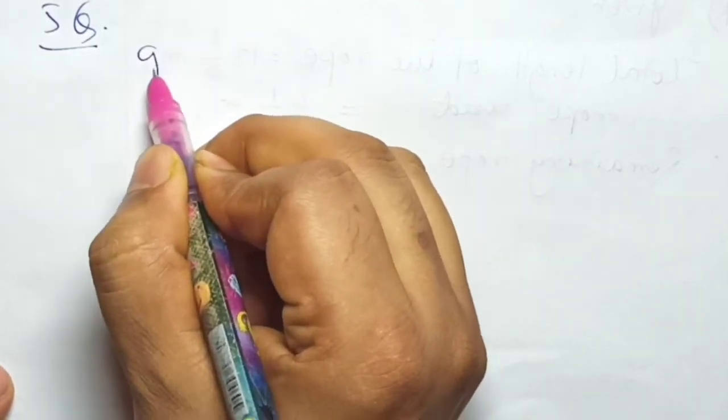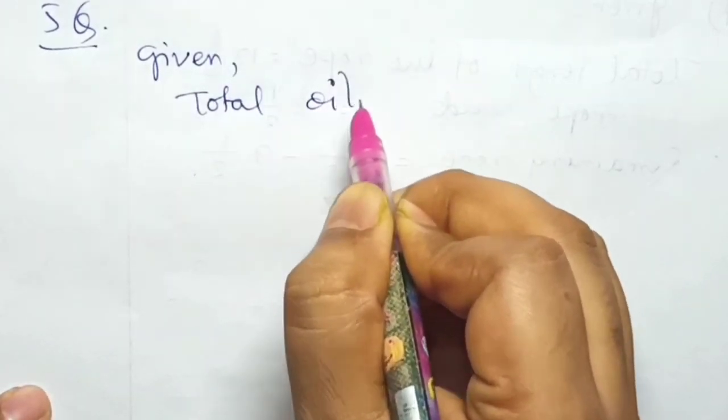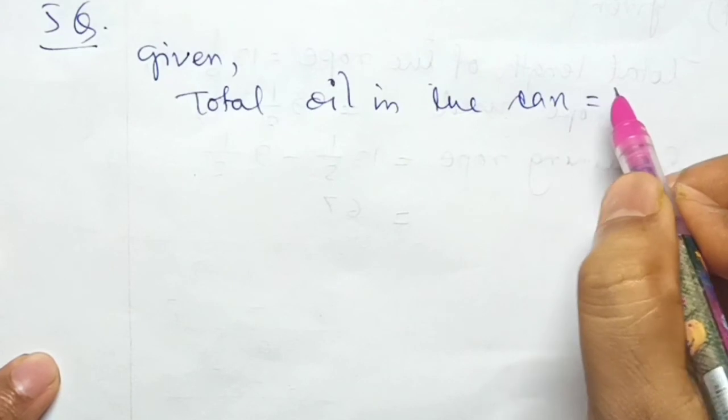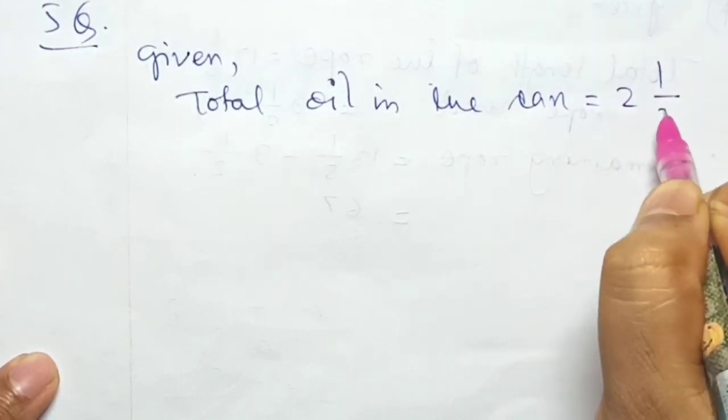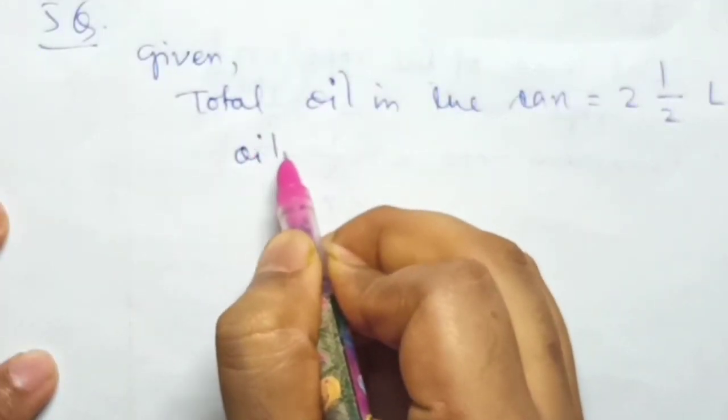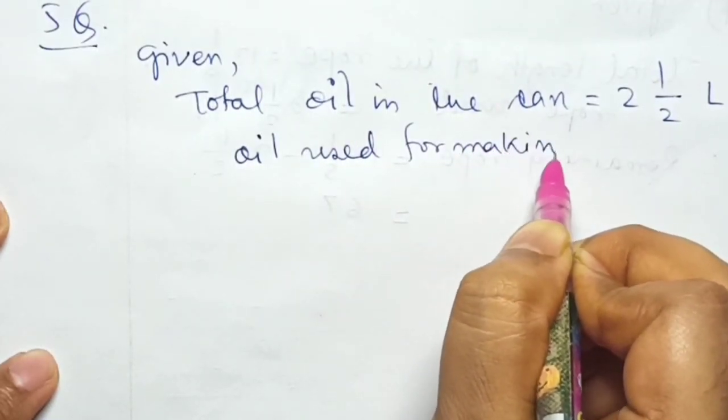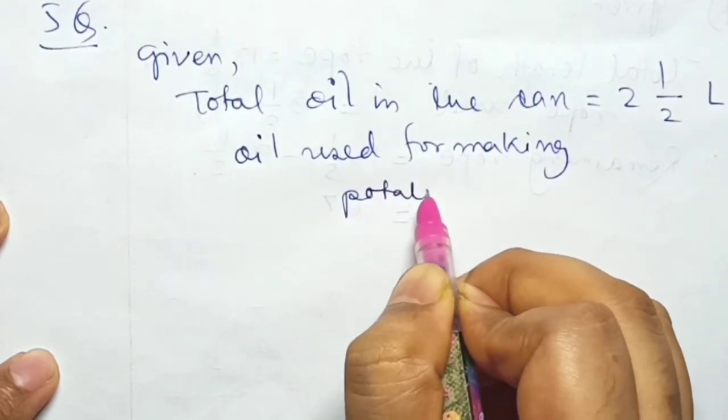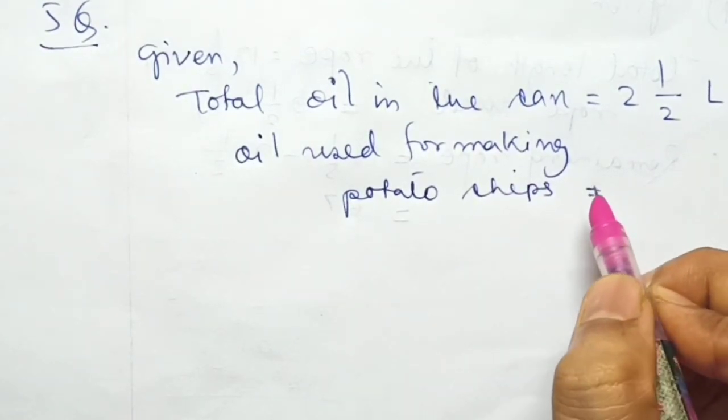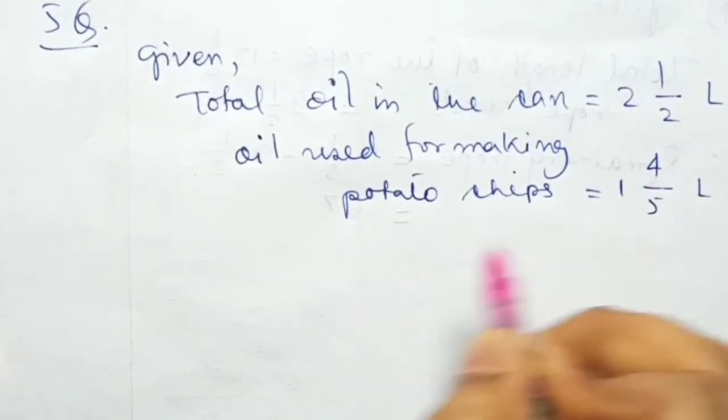Given: total oil in the can = 2 and 1/2 liter. Oil used for making potato chips = 1 and 4/5 liter. Therefore, remaining oil equals 2 and 1/2 minus 1 and 4/5.